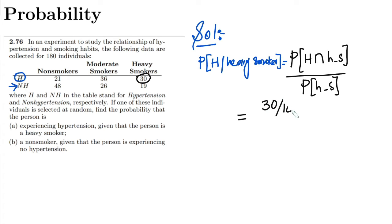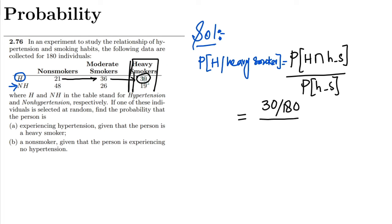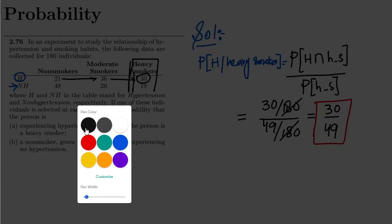30 divided by 180 is the probability that a person has hypertension and is also a heavy smoker, since 30 is the number of persons who are heavy smokers and have hypertension, divided by the total 180 individuals. For the probability of being a heavy smoker, we use 30 plus 19, which is 49, divided by 180. The 180s cancel out, giving us 30 divided by 49 — that is the solution to part A.